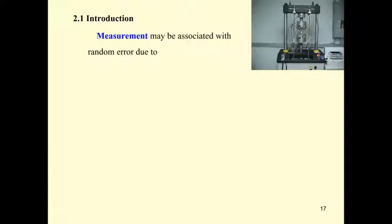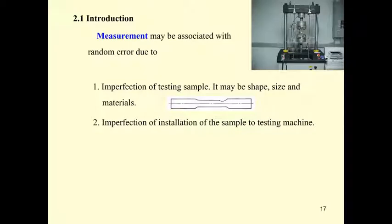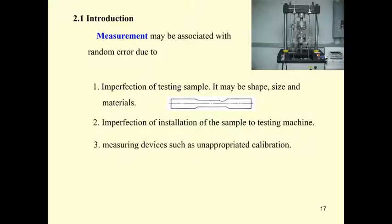For the material test, we measure the force and the displacement, elongation, or contraction of the specimen. The measurement always has some random error due to, for example, the imperfection of the testing specimen — so you have to be careful when preparing the sample. It may also be due to imperfect installation, so follow the standard carefully when placing the specimen in the machine. You also need to calibrate the measuring devices properly — the load cell to measure force and the strain gauge to measure elongation.